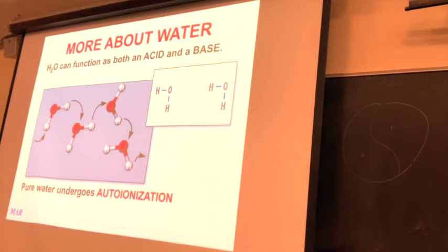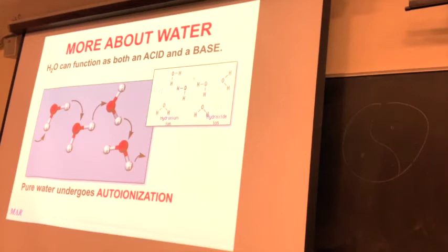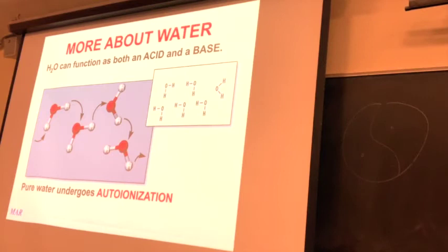Let's talk more about water. Without the addition of any other substances, two water molecules can interact with each other to produce a hydronium ion and a hydroxide ion by transfer of a proton from one water molecule to another. This process is called auto-ionization.